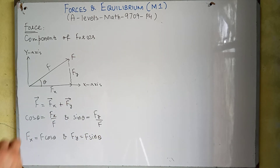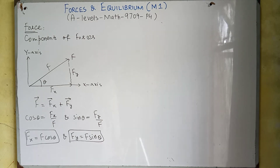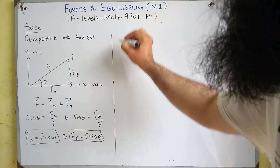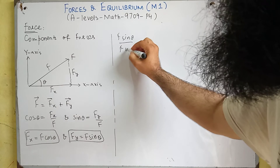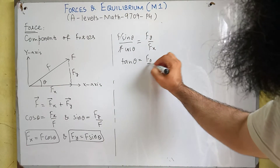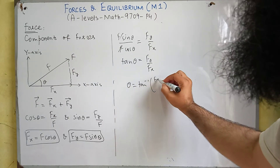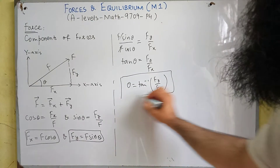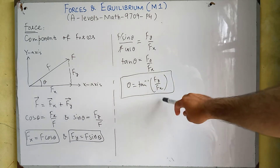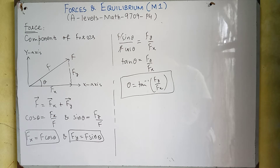So Fx is the horizontal component and Fy is the vertical component of this force. If we want to find the angle of this force — the angle between force F and the x-axis — we can divide these two relations. We will have F sine theta over F cos theta, which equals Fy over Fx, and this becomes tangent theta. So theta is equal to tangent inverse of Fy over Fx. In this way we can find the direction of the force by taking the tangent inverse of the y-component divided by the x-component.